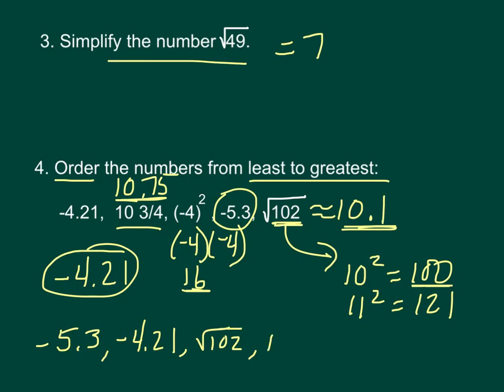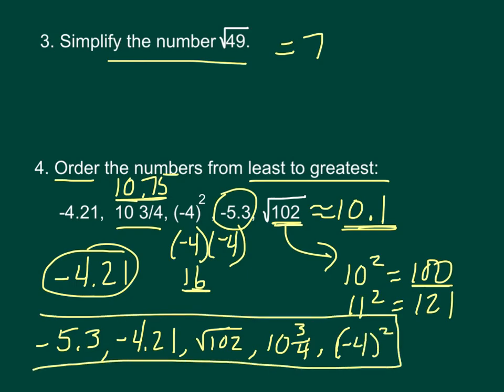The next one would be 10 and 3 fourths. Do you see how I'm writing them back in the original form? And then negative 4 squared is 16, so negative 4 squared. And there's your answer. Again, be sure and read that it's least to greatest and put it back in the original form.